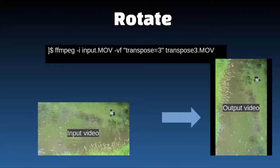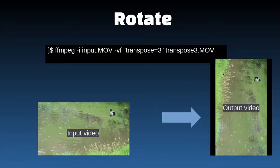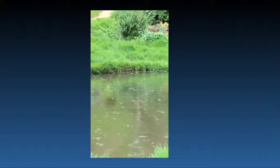And transpose three — this is the last rotation option. It rotates the video 90 degrees counterclockwise and also does a mirror image. Here's what the video looks like.